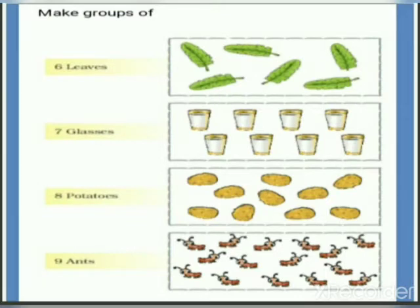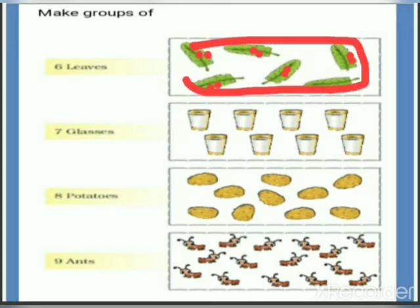Open page number 31 — make groups of. In the first group there are one, two, three, four, five, six leaves. Let us make a group of six leaves: one, two, three, four, five, six. Next row, there are one, two, three, four, five, six, seven, eight glasses.